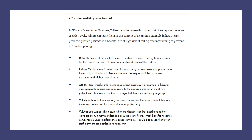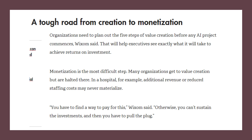The fourth step is value creation. In this scenario, new policies result in fewer preventable falls, increased patient satisfaction, and shorter patient stays. The final step is value monetization, which occurs when changes can be linked to tangible value — for example, reduced cost of care benefiting hospitals under performance-based contracts, or fewer staff members needed in a given unit. Organizations need to plan out all five steps of value creation so executives can see exactly what it will take to achieve return on investment.